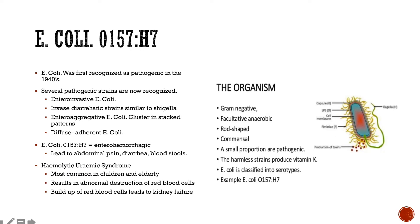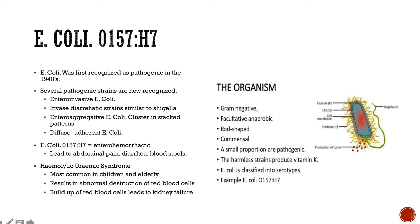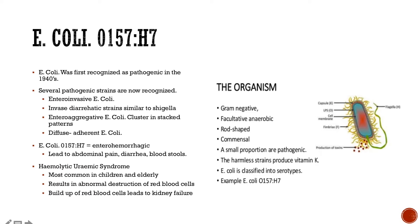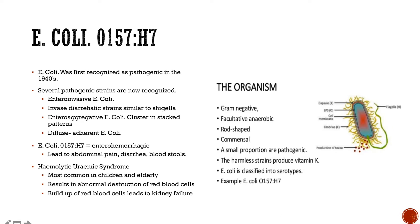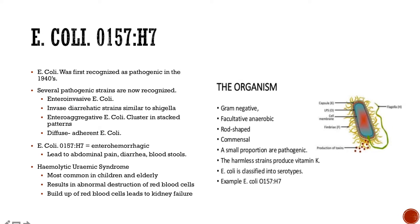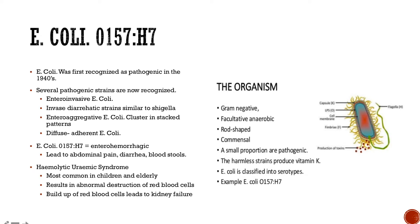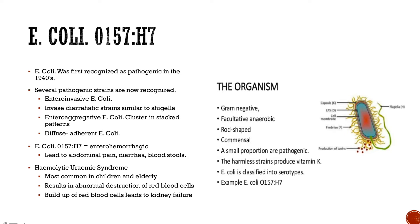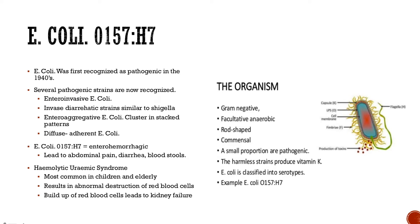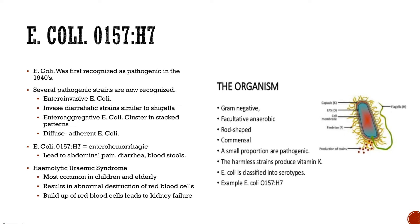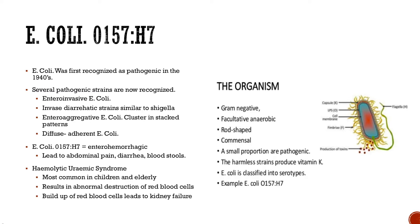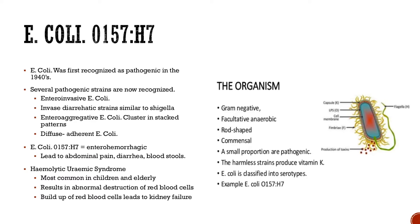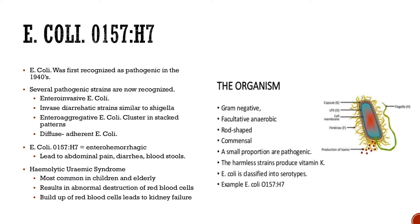Entero-invasive E. coli is an invasive diarrheal strain similar to Shigella. Entero-aggregative E. coli clusters in a stack pattern around colonization sites. And diffuse adherent E. coli colonizes a local area of the mucosa but is not clustered in a stack pattern. The specific E. coli strain O157H7 is considered to be enterohemorrhagic bacteria, meaning that when these bacteria are ingested, they lead to abdominal pain, diarrhea, and often bloody stools.